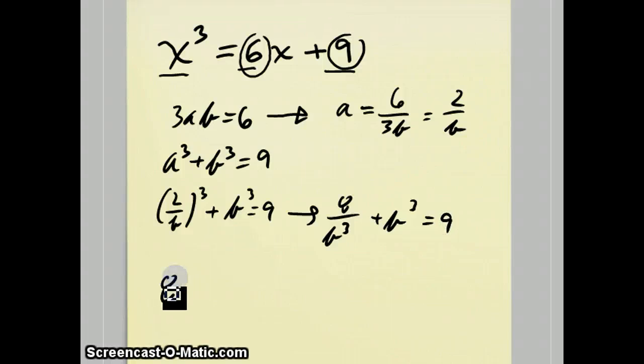Then I can multiply this entire equation through by b cubed. I will get this, which I can rearrange to b to the 6th minus 9b to the 3rd plus 8 equals 0.